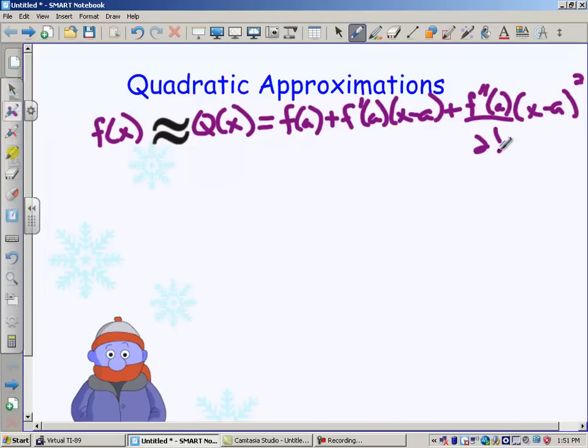Now, some of you might think, why did I write 2 factorial? Because 2 factorial is just 2 times 1, which is just 2. But I'm putting this in here because later on when we build our Taylor polynomials, we're going to need that for our pattern because there's going to be factorials involved.